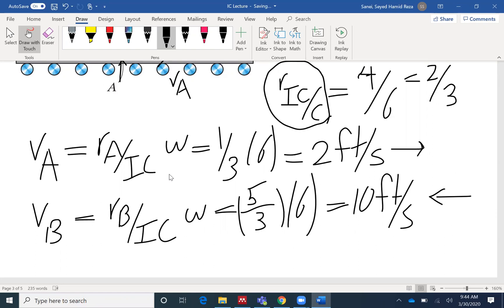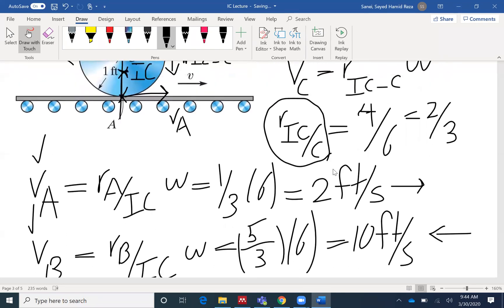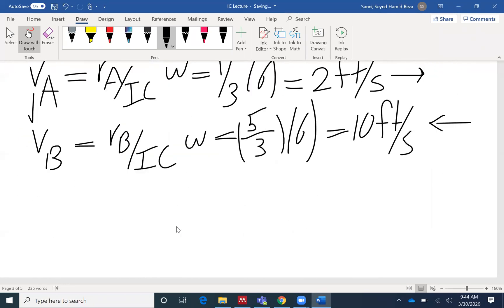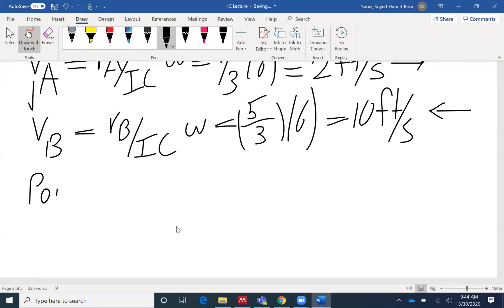So I found velocity at A, velocity at B. And if I compare velocity at A, which is 2 feet per second, to V, which is 12, I know the velocities are not the same. So point A is actually sliding on the conveyor belt simply because the two velocities are not the same.